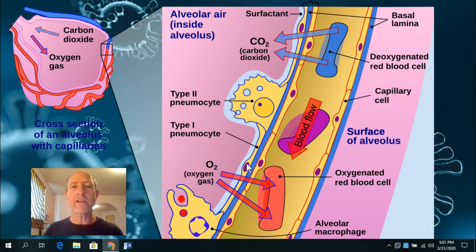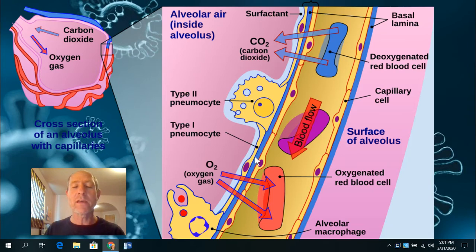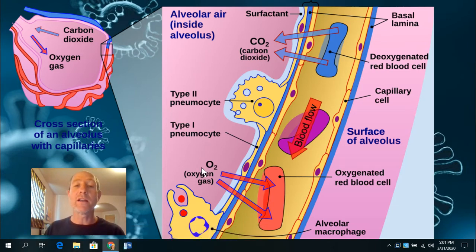The type one pneumocytes you can see are really flattened out and thin. And that's so that there's not much cytoplasm that the gas has to diffuse through the carbon dioxide gas or the oxygen gas. So it can easily pass through that, but air can't get through there. You don't want air getting into your blood. So air can't get through the cell, but oxygen in the air and carbon dioxide in the air can get through the cells.